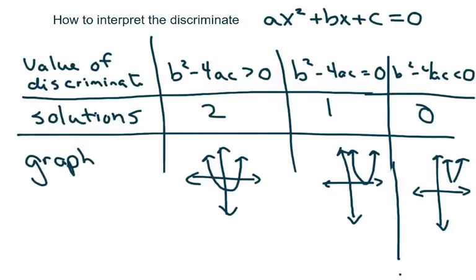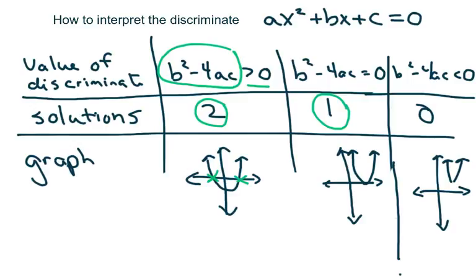Hi everyone. In this video we're going to learn to interpret the discriminant — that's the part under the radical sign in the quadratic formula. If our discriminant is positive, we're going to have two solutions, meaning it crosses the x-axis twice. If our discriminant equals zero, there's one solution — it just touches once. And if it's negative, then we don't have a real solution; we have a complex solution, which we'll get into a little later.